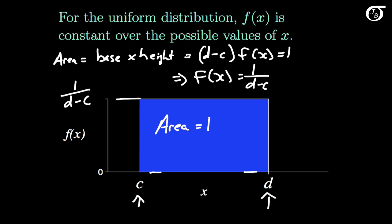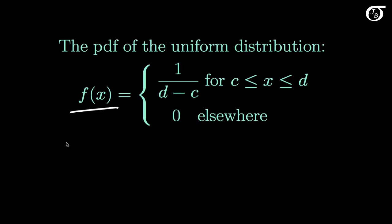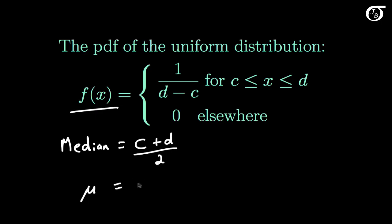Suppose we wanted to find the median of this distribution. The median is the value of the variable that splits the distribution in half, with half the area to the left and half to the right. For the uniform distribution, that is simply the midpoint between c and d. Since this is a symmetric distribution, the mean and median are equal — both equal to c plus d over 2.